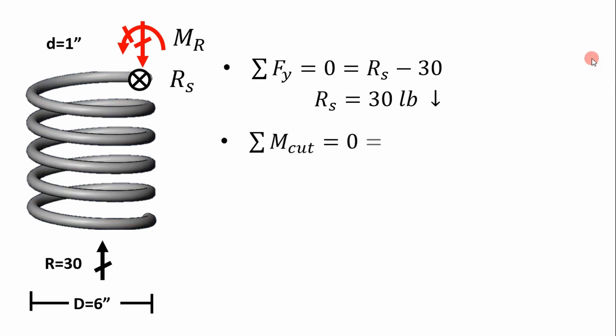Now we take our sum of moments about the cut location. In this case, our cut location is going to be the middle of this coil. And we just sum our moments. And if you look at this, we're assuming this is happening at three inches from the edge. And since we're calculating the moment in the middle of the spring, we got to subtract the radius.